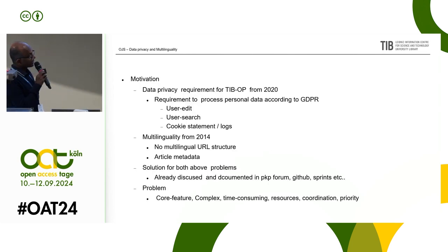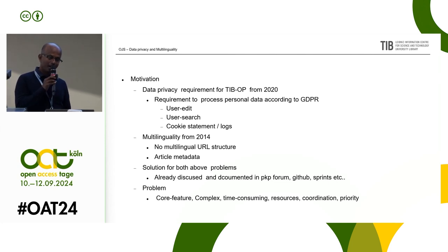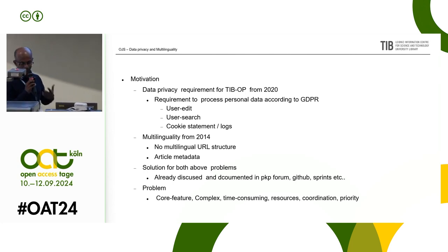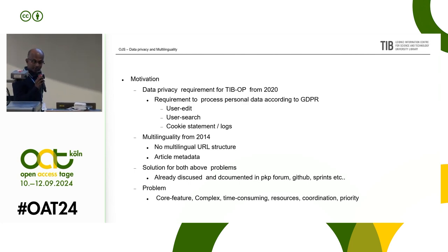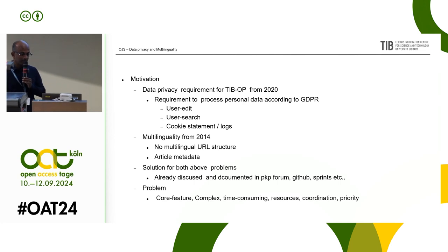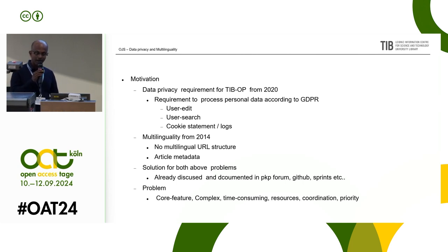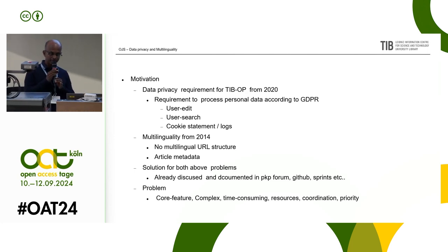The motivation: I changed to TIP in 2020 to build a diamond open access press, and the first thing our GDPR officer said was that our OJS is not GDPR compatible. General managers can edit users without their consent. General managers can search users in other journals without their consent and list their email addresses. The default theme in OJS — the accessibility has tested one — does not have a cookie statement automatically. And logs: as a technical person would know, logs are not always dependent on the application, but you have to anonymize IP addresses and personal data.